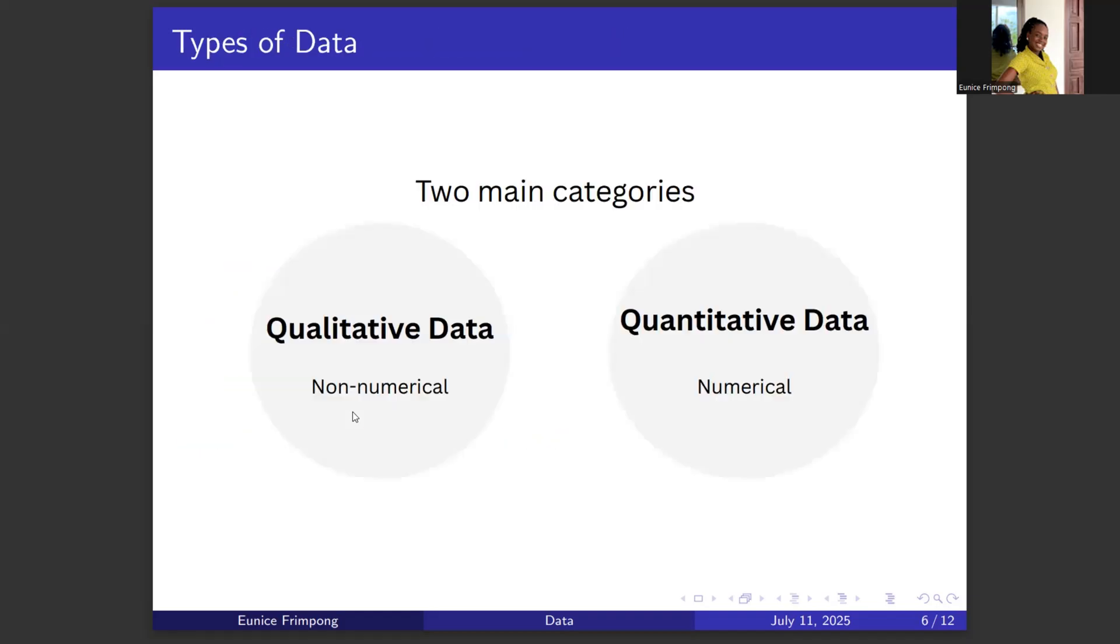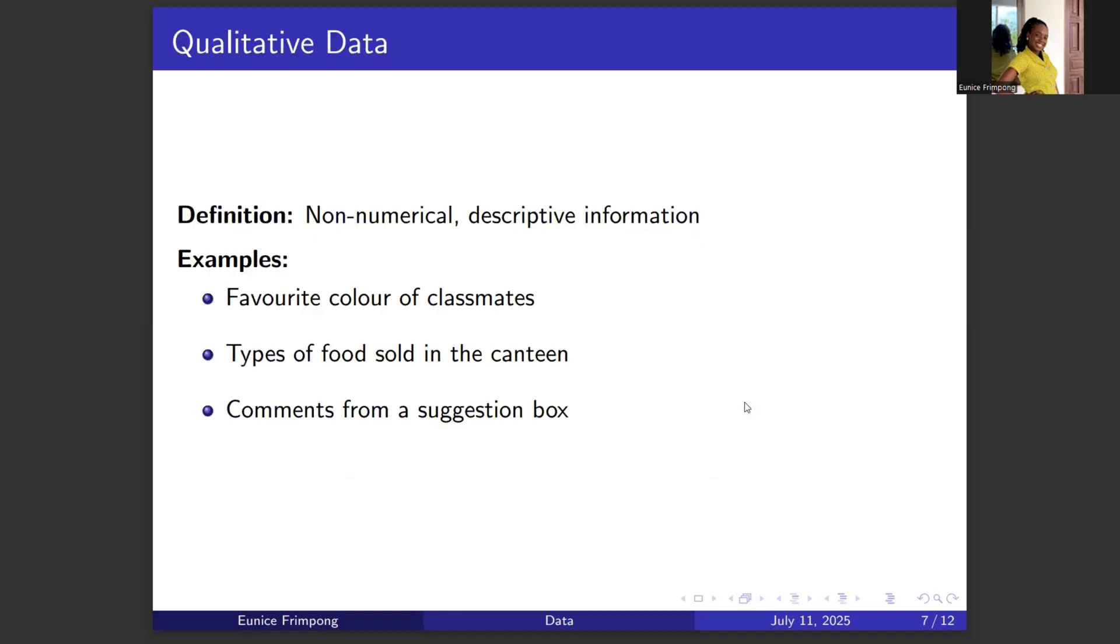What are the types of data? There are two main categories. When we look at types of data, the first is qualitative data. And this kind of data is non-numerical, which means we don't use numbers to identify the data. The second type is quantitative data. And this kind of data is numerical, meaning we use numbers to identify this kind of data.